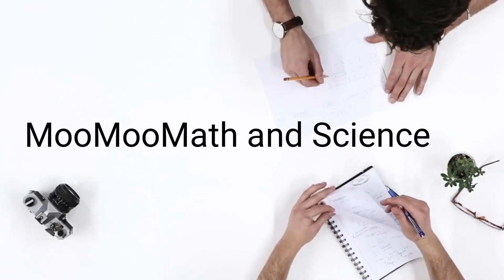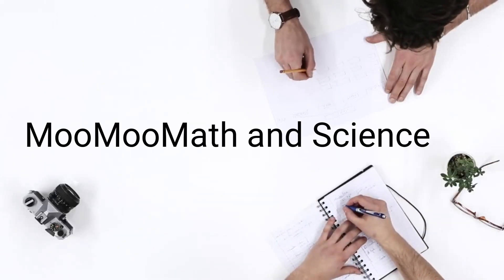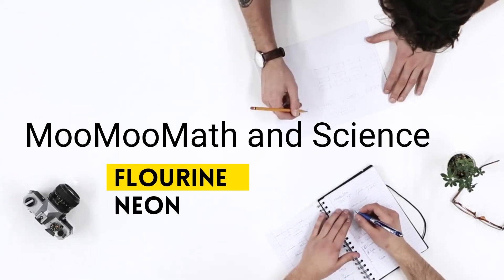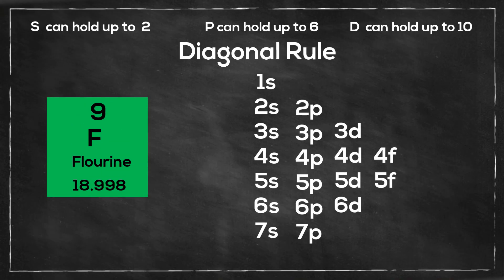Welcome to Moo Moo Math and Science. In this video I would like to cover setting up the electron configuration of fluorine and neon, and I will be using the diagonal rule.